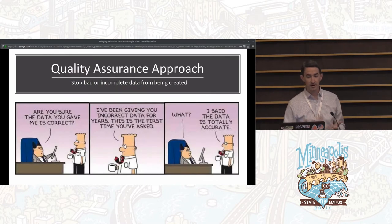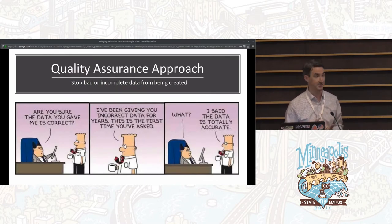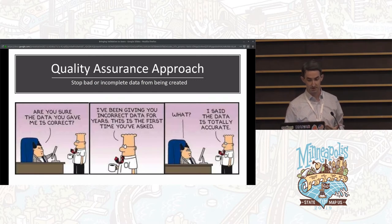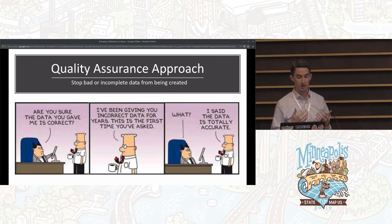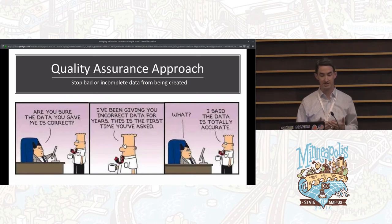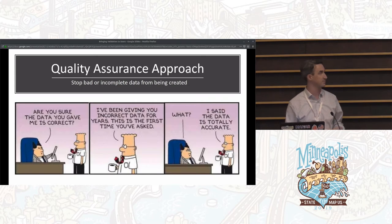Our team's approach has been to stop bad or incomplete data from being created or uploaded in the first place. This can help give immediate feedback to new mappers and give them the confidence that they may need to ensure they're contributing quality data. We're going to share with you some of the checks that we've created for both iD and JOSM editors.